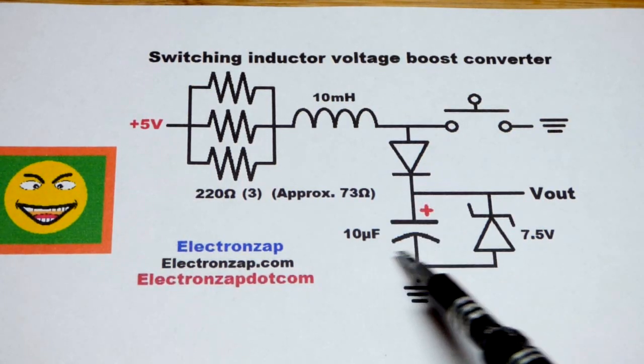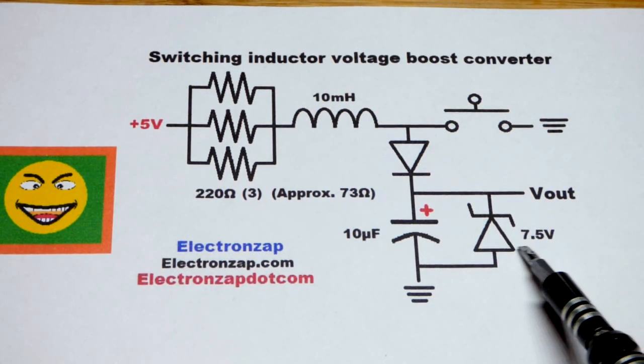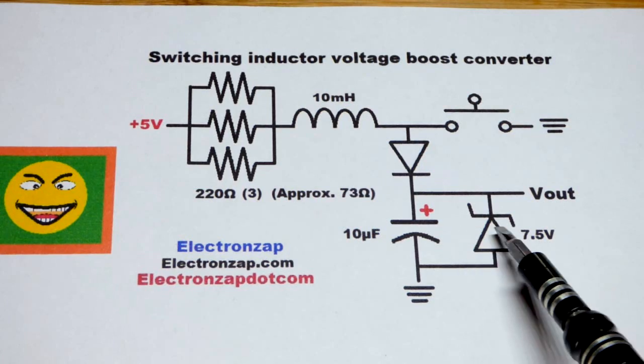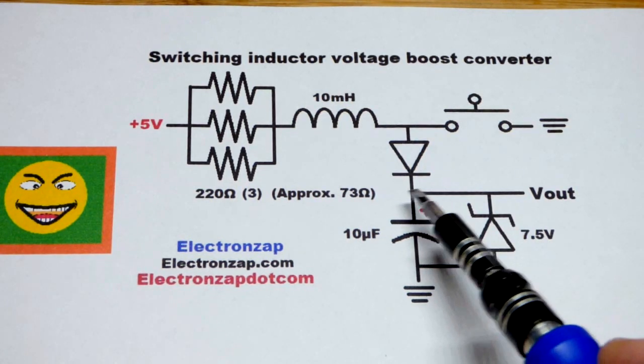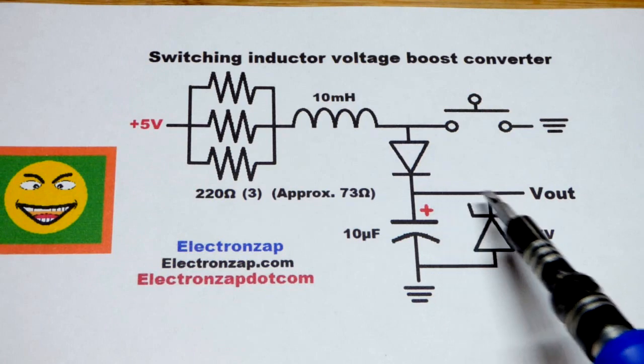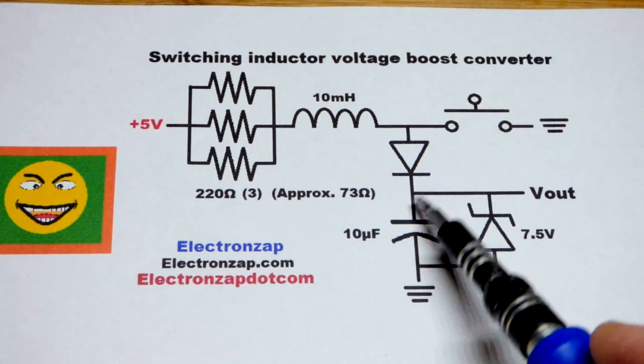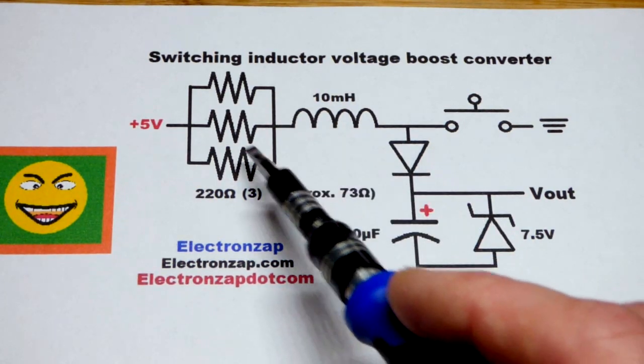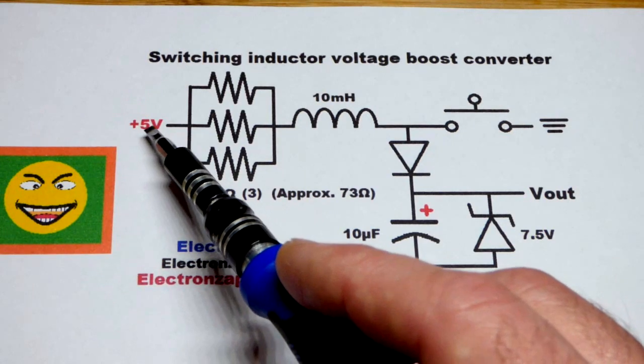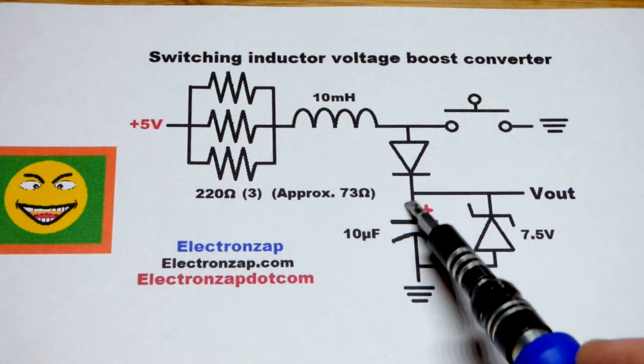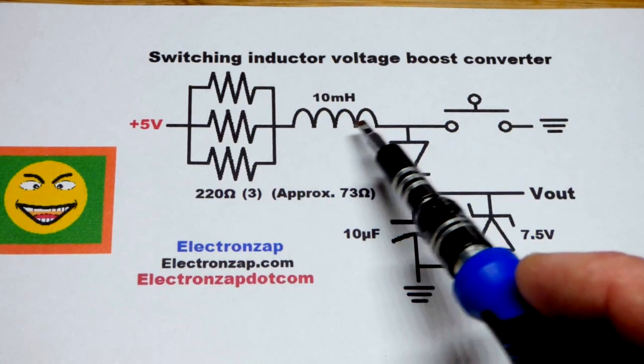We have a capacitor here we can charge up to 7.5 volts because the zener diode will start letting current flow through it as needed to prevent the voltage from rising above that. The inductor, to begin with, we will apply power and the capacitor is going to charge to about 4.5 volts approximately.